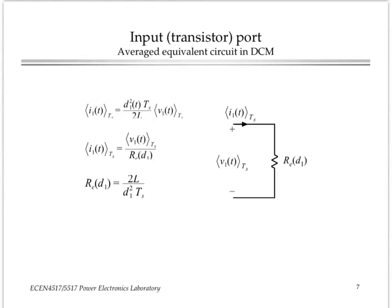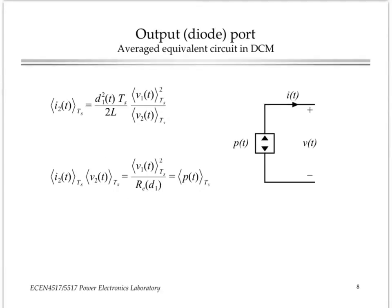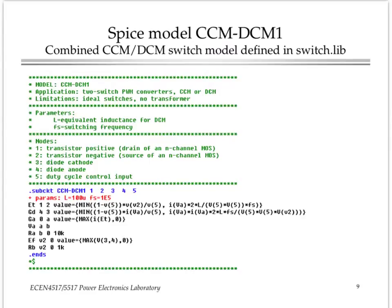So what happens on the diode port? The output port then looks like what is called a power source. We find out that the average value of the current at the output of the diode port is proportional to the power absorbed on the input port, divided by the average voltage across the terminals of the diode port.